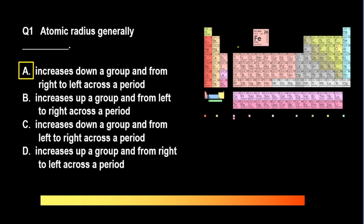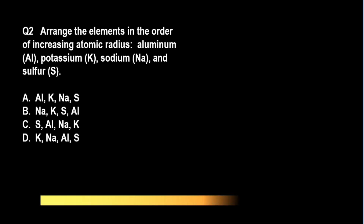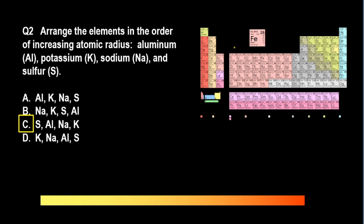For the next question, arrange the elements in order of increasing atomic radius: aluminum, potassium, sodium, and sulfur. A. Aluminum, Potassium, Sodium, Sulfur. B. Sodium, Potassium, Sulfur, Aluminum. C. Sulfur, Aluminum, Sodium, Potassium. D. Potassium, Sodium, Aluminum, Sulfur. The correct answer is letter C. The trend for atomic radius increases as we move down and from right to left — the closer the element is to francium, which is at the bottom left, the bigger the atom.